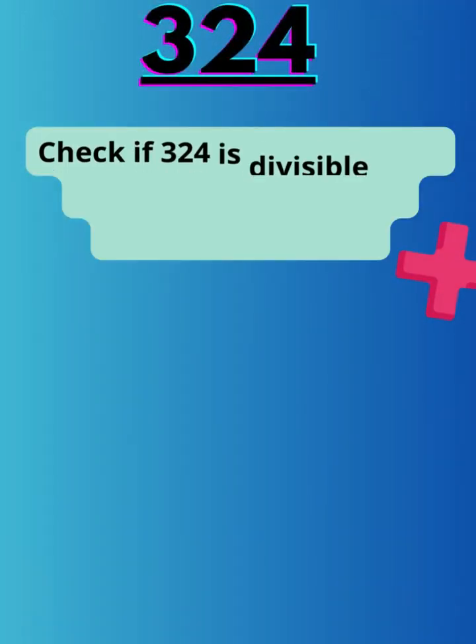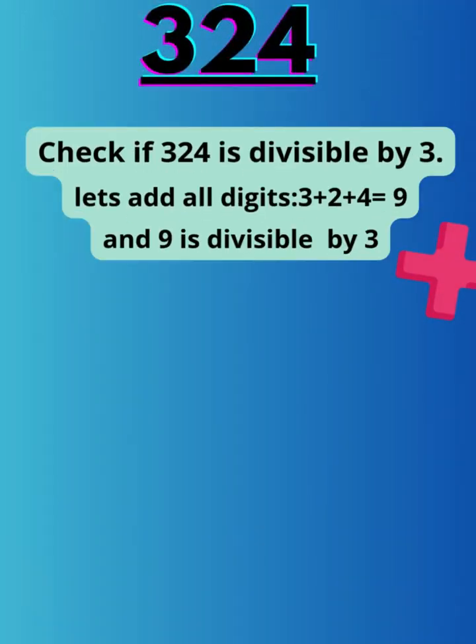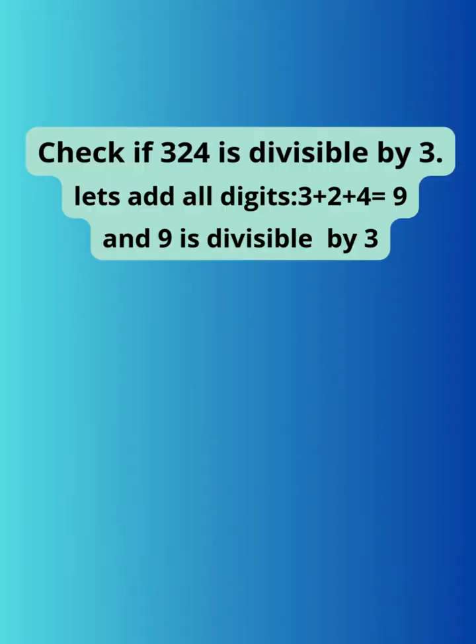Let's take the example of 324. Check first its divisibility by 3. Add all digits of 324, that means 3 plus 2 plus 4 equals 9. And 9 is divisible by 3.